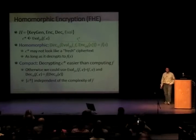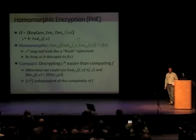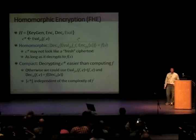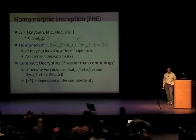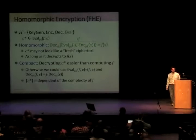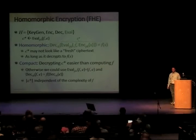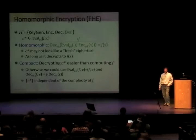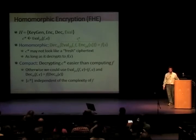The security notion we're interested in is semantic security — essentially that the distribution of public key and encryptions of zero is computationally indistinguishable from the distribution of public key and encryptions of one, by any polynomial-time algorithm. Homomorphic encryption — also called fully homomorphic encryption — adds one additional procedure: an evaluation procedure. It takes a ciphertext or vector of ciphertexts, a description of a function f, and the public key, and gives back another ciphertext c*, such that decrypting c* yields f(x), where x was encrypted in the original ciphertext.